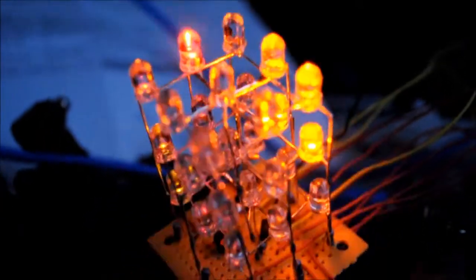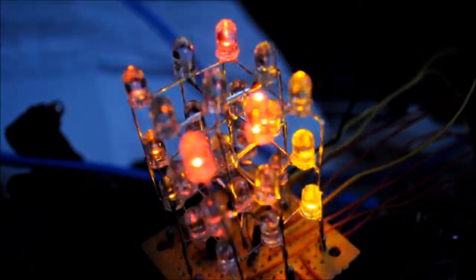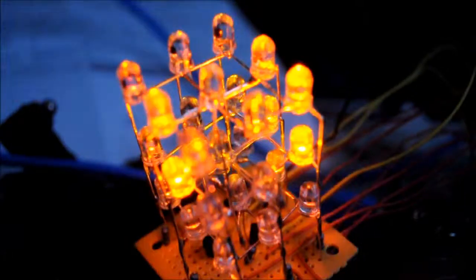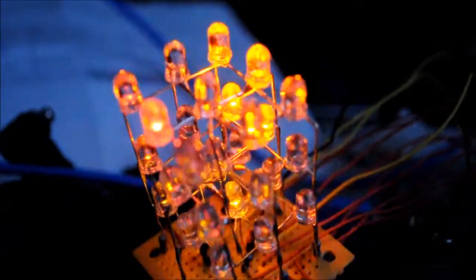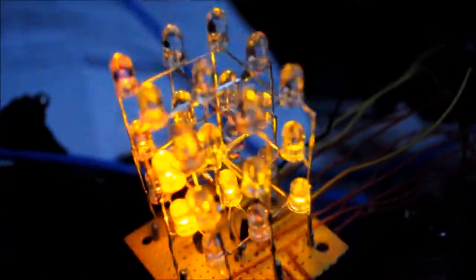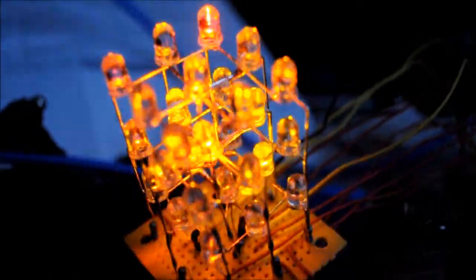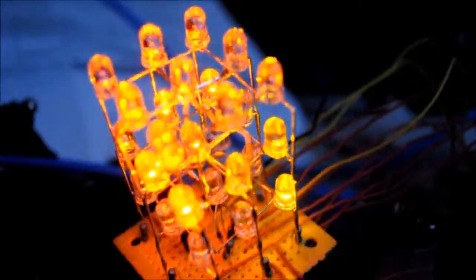The way I have the interrupt set up is that it actually handles the multiplexing, and I have an array that contains the state of every LED. Every time that interrupt is called, it will basically go through and flash one layer with the LED states that are in that array.